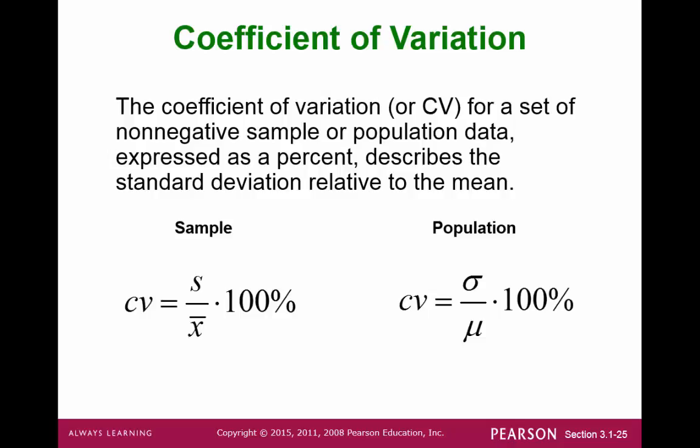Finally, we go back to the idea of being able to compare standard deviations with very different means. The coefficient of variation finds the ratio between the standard deviation and the mean. This is the end of section 3-3.